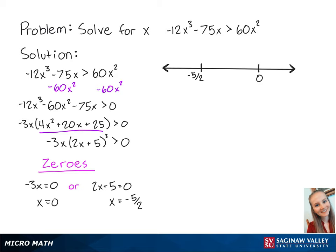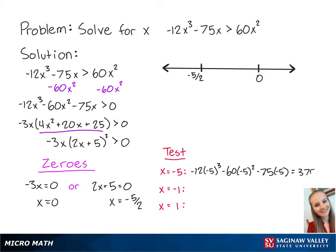Now we're going to use this number line to find the values of x that make the inequality a true statement. We're going to do this by plugging in values of x from each region. For x equals negative 5, we have negative 12 times negative 5 cubed minus 60 times negative 5 squared minus 75 times negative 5, which is all equal to 375. Since this number is positive, x values less than negative 5 halves will make the left side of the inequality positive.